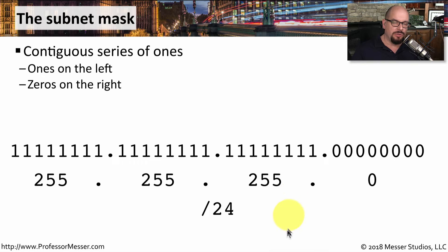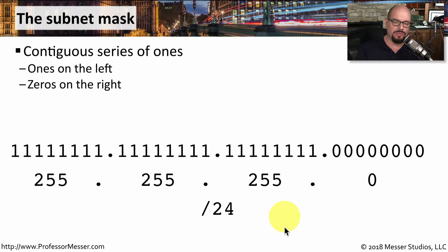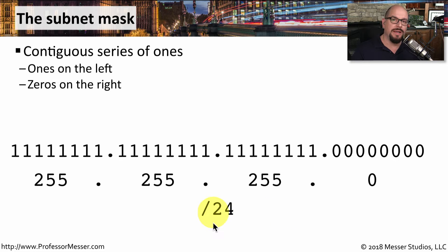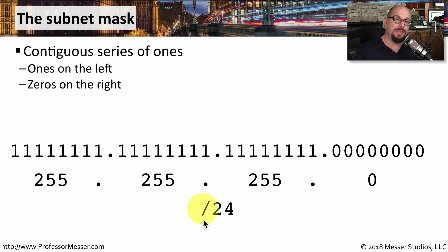This is also called a CIDR block notation. It stands for Classless Inter-Domain Routing. You might also hear this referred to as prefix notation or slash notation, because we use the slash to designate the number of bits that will be used for the subnet mask.